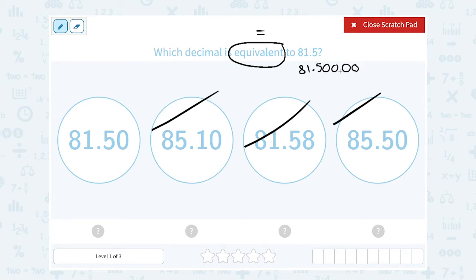I could keep going and add as many zeros as I want at the end of my decimal and it does not change its value. So 81.50 is exactly the same value or equivalent to 81.5.